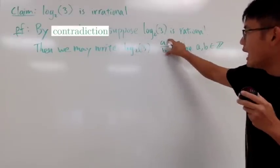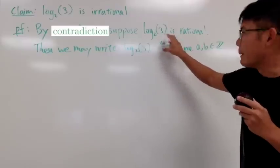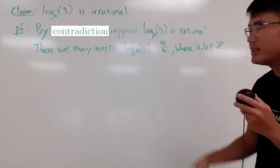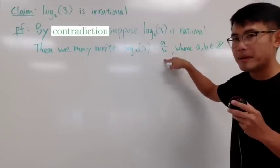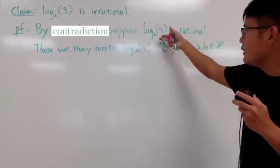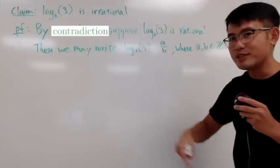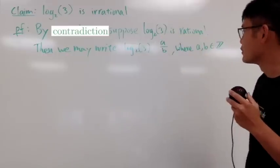So if you have a fraction right here to get positive, of course, you have two situations: positive divided by positive, or negative divided by negative. And of course, if you have negative divided by negative, you can just cancel out the negative and just look at the positive version, right?